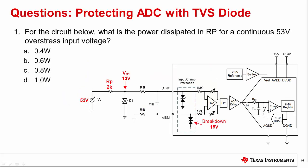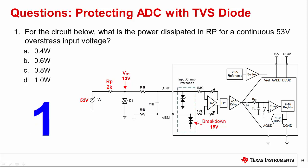Question one: For the circuit below, what is the power dissipated in RP for a continuous 53 volt overstress input voltage? The correct answer is C, 0.8 watts. Subtracting the 13 volt drop from the 53 volt input signal gives 40 volts across the 2 kiloohm resistor. 40 volts squared divided by 2 kiloohms results in 0.8 watts.